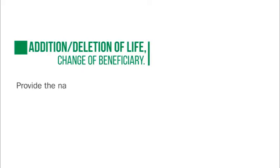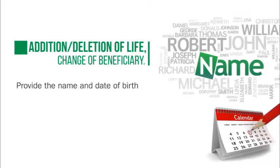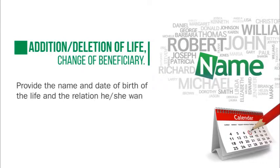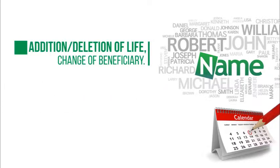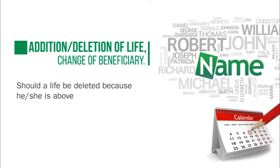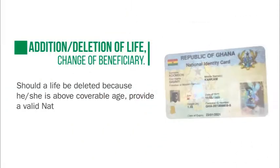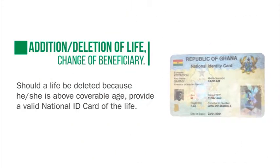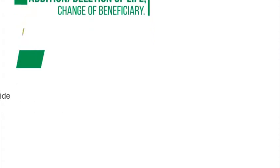Addition and deletion of life, and change of beneficiary: provide the name and date of birth of the life and the relation he or she wants to delete, add, or change. Should a life be deleted because he or she is above the coverable age, provide a valid national ID card of the life.